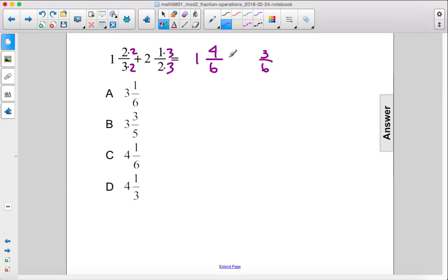Then we move over our whole numbers and our addition sign, and this is our new problem. So we just add the fractions, four plus three gives us seven over six, add the whole numbers, we get three.